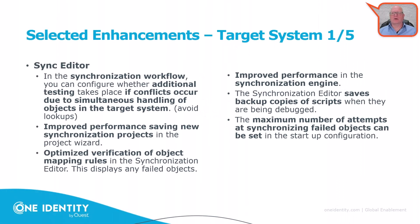Now let's talk about target system enhancements, starting with the synchronization editor. There are now additional tests available, especially in conflict handling during the simultaneous handling of objects. This is a reporting feature that can be improved upon. Performance optimization happens in many places — synchronization projects and synchronization overall are faster. The verification of object mapping rules was also improved — they are now more detailed and more helpful, which should benefit those building synchronization projects from scratch.